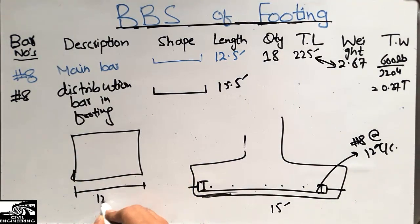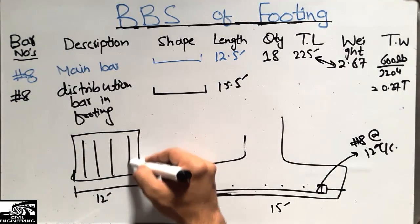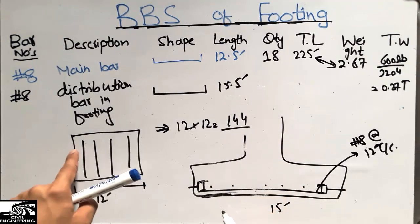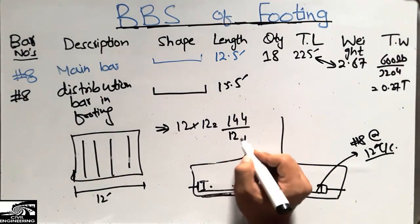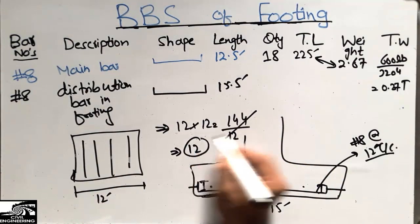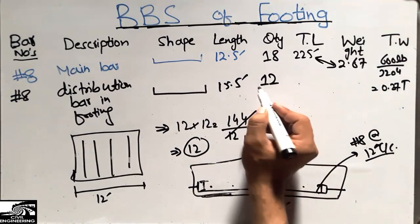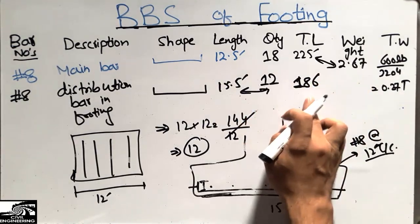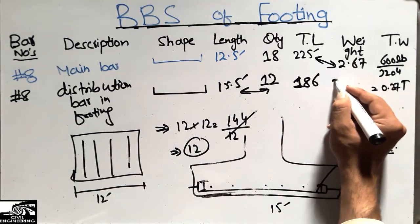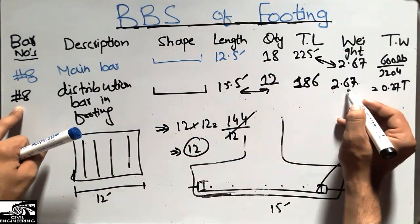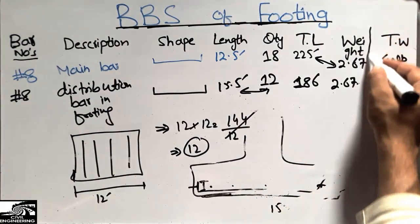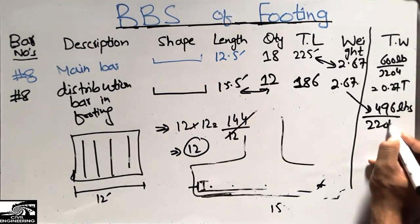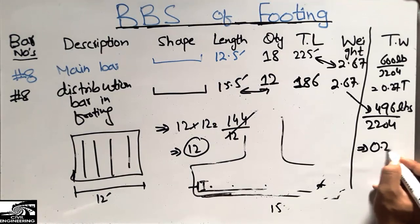In the plan view for the other section, the total length in this direction is 12 foot. The distribution bars are placed along this 12-foot span. Converting to inches: 12 foot × 12 = 144 inches. Dividing by 12 inches center to center spacing gives 12 bars. The total length is 12 × 15.5 = 186 foot. The unit weight of the number 8 bar is 2.67 pounds per foot, giving a total weight of 496 pounds. Dividing by 2,204 gives 0.22 tons.